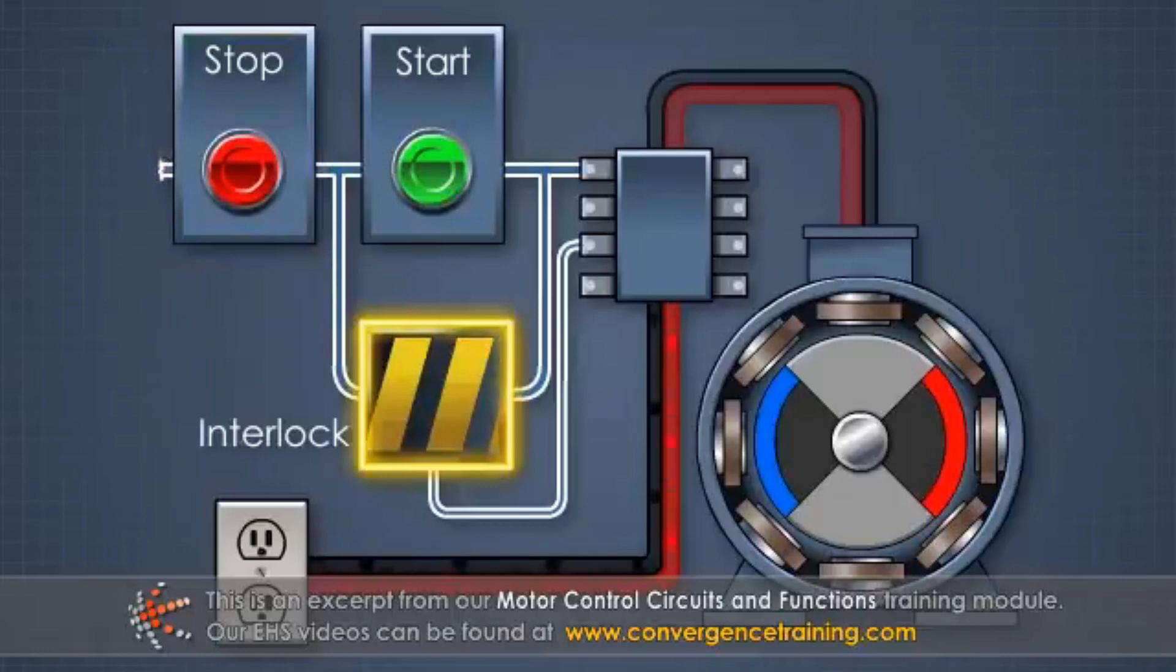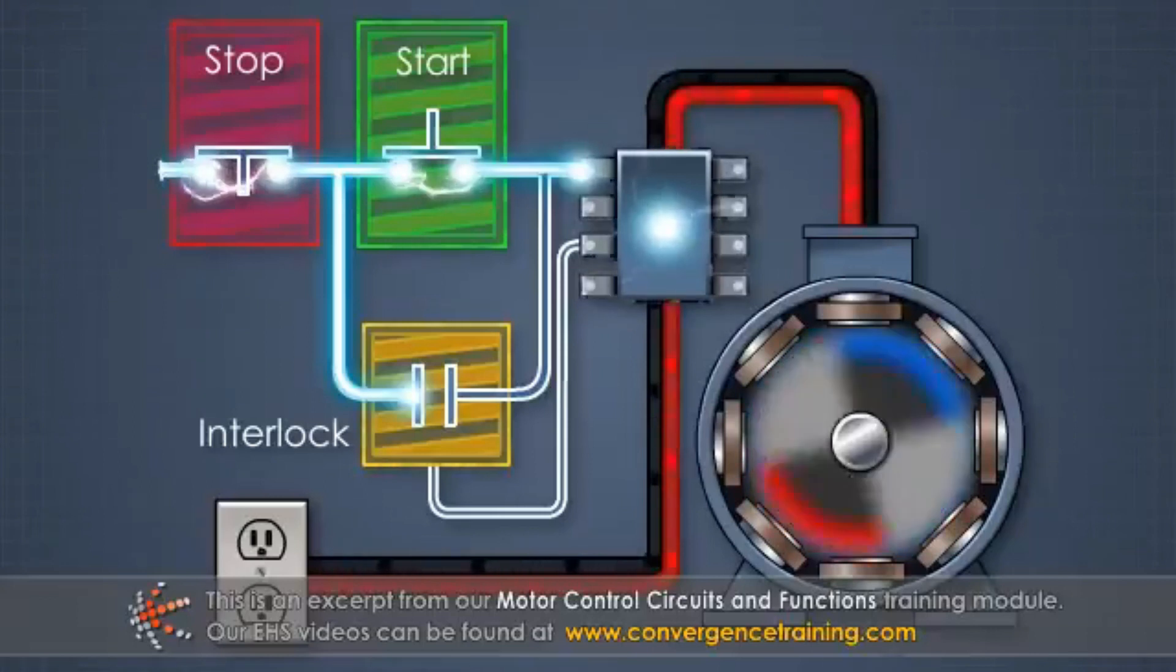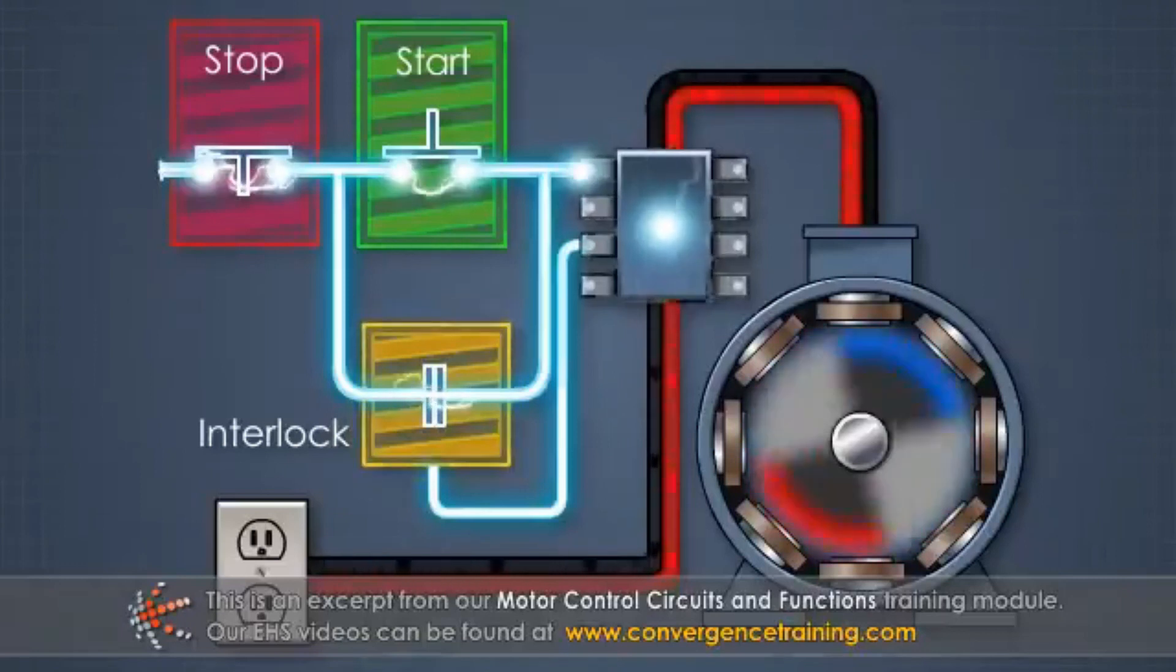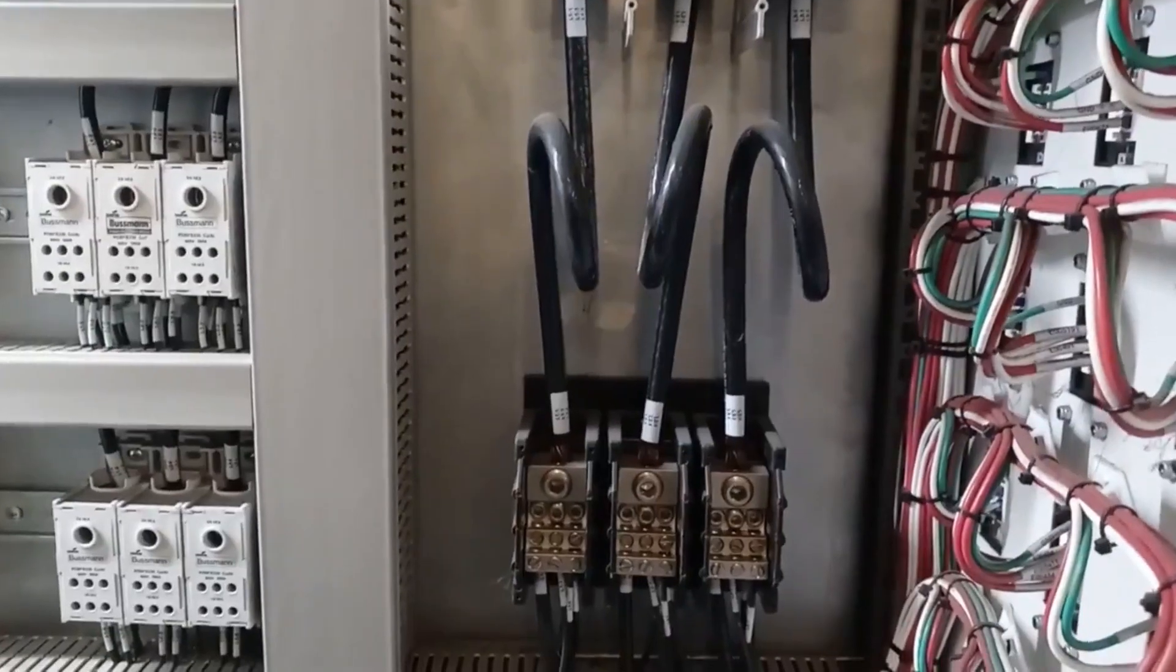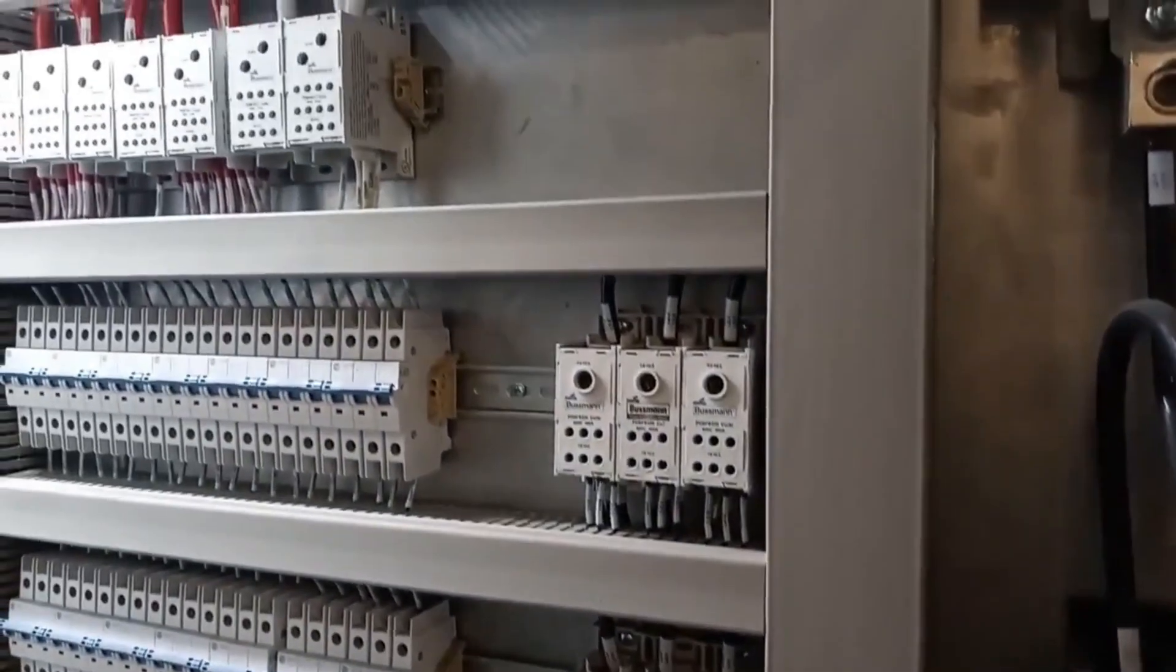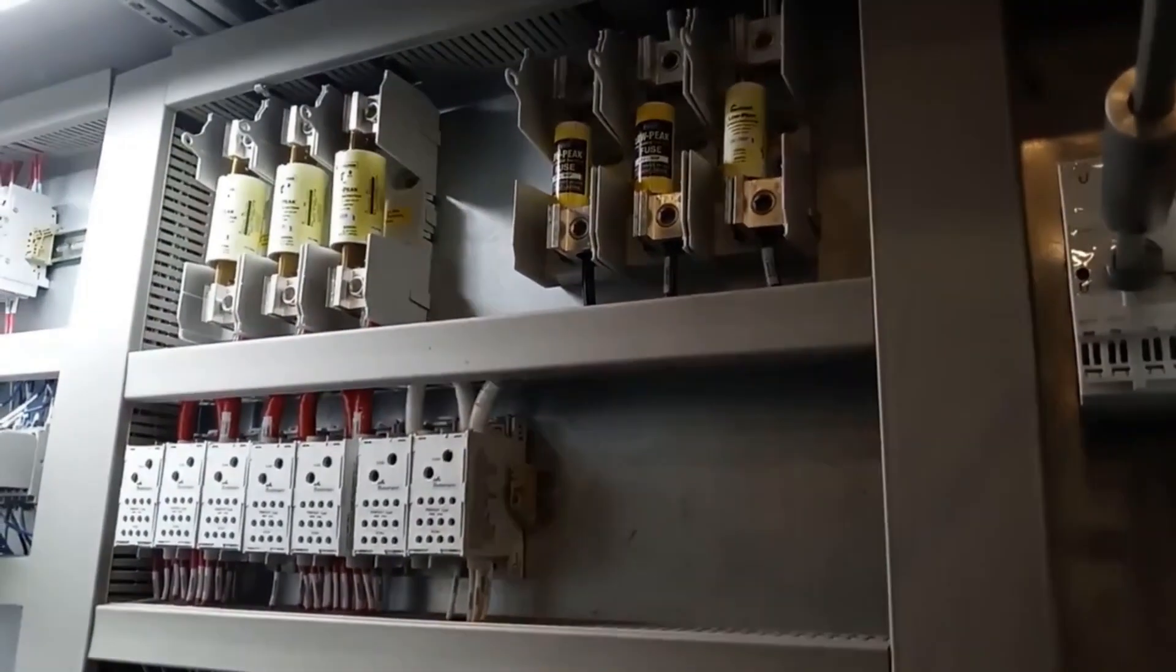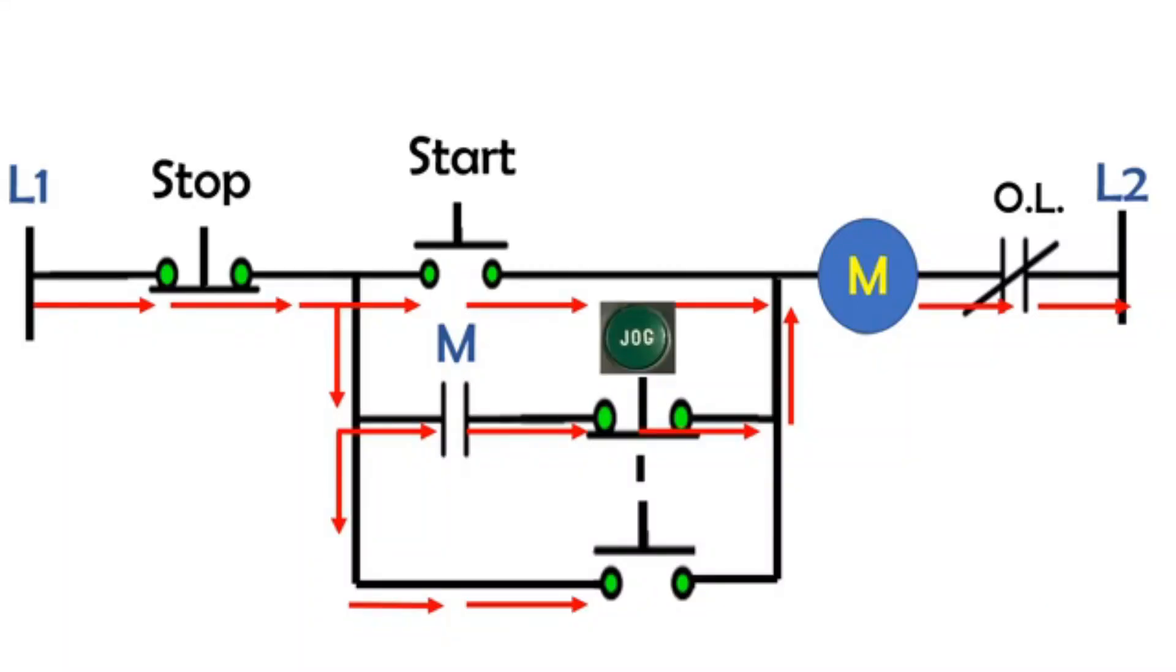Our tutorial for today is jogging circuit basic motor control. Jogging is the process that uses quick power in order to move a motor or load like a conveyor into a desired position. According to NEMA National Electrical Manufacturers Association, jogging is a quick repeated closure of a circuit to start a motor from stop motion for the purpose of accomplishing a small movement of the driven machine. Let's get started.